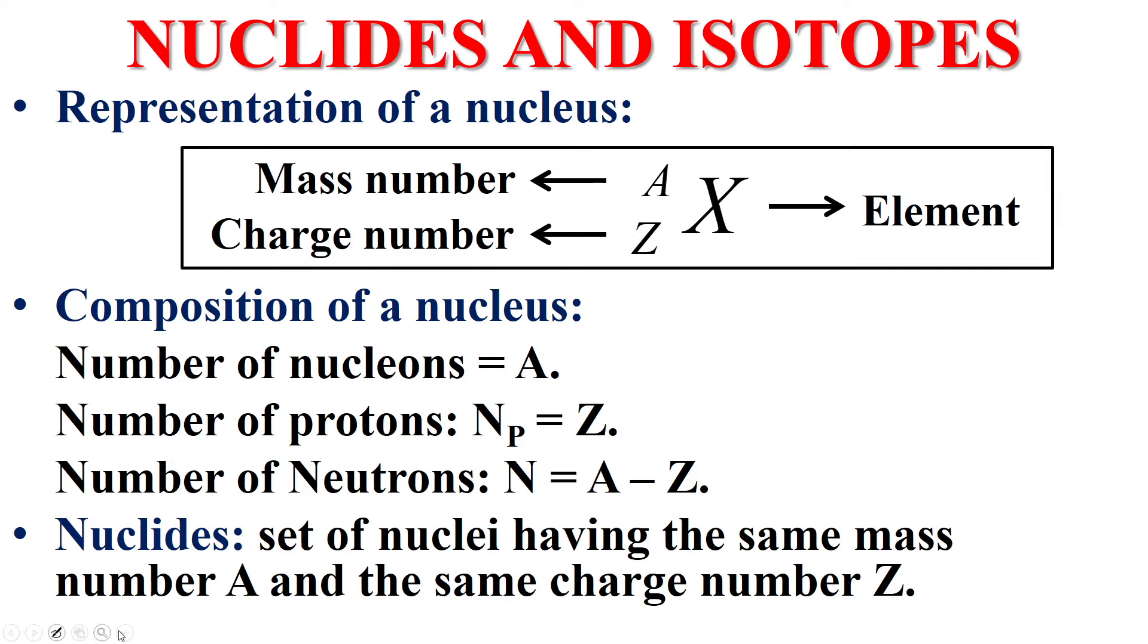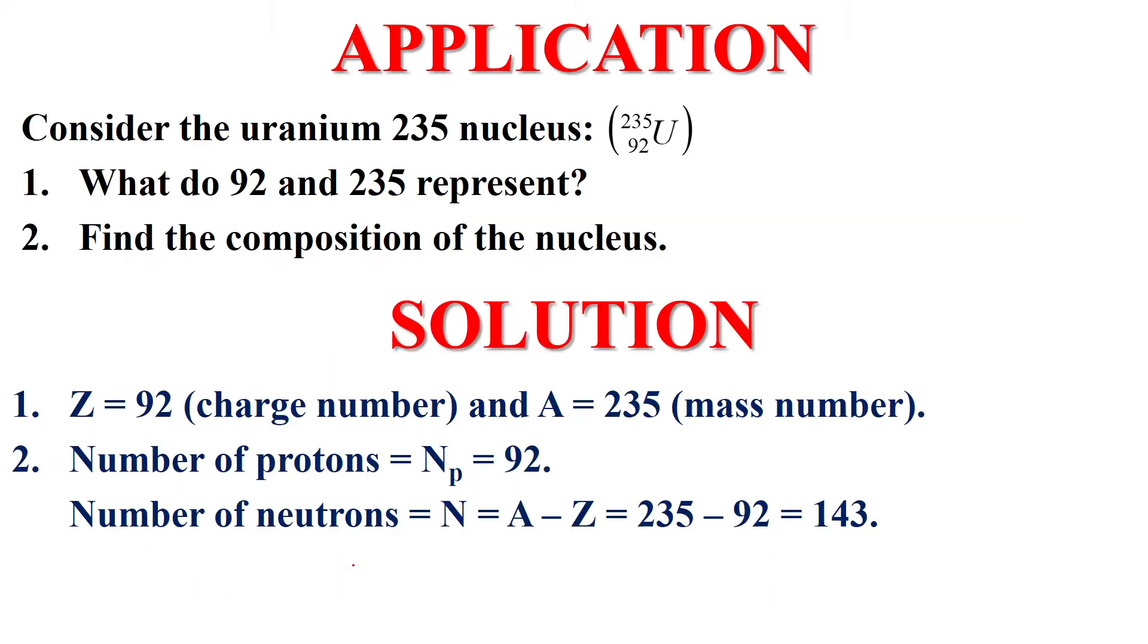The second objective is to define nuclides. Nuclides are the set of nuclei having the same mass number A and the same charge number Z.